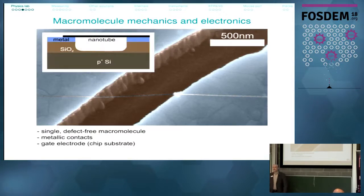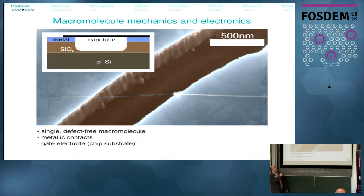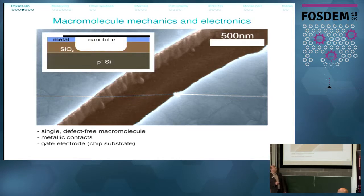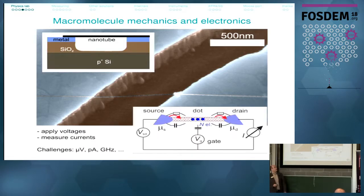We are looking at the mechanics and electronics of single such molecules. You have two metal electrodes and one molecule lying across them in this electron microscope picture — the scale bar is half a micrometer, 500 nanometers. We have a single macromolecule with metallic contacts and a gate electrode on the chip substrate. We apply a source voltage driving the current through the tube, a gate voltage changing the electrostatic potential, and we measure the current that flows.